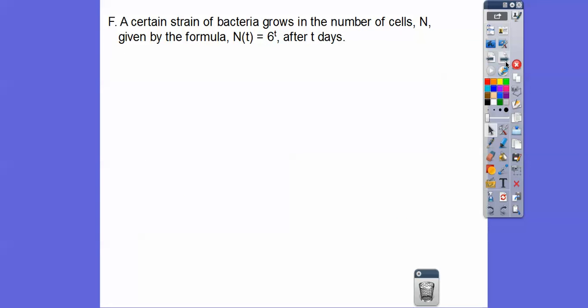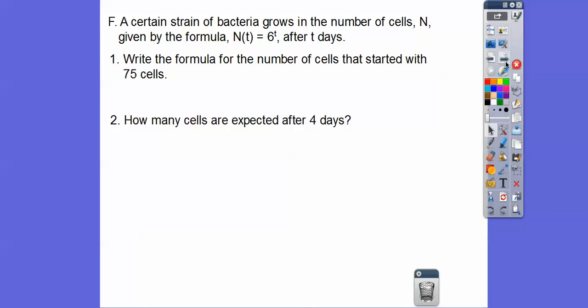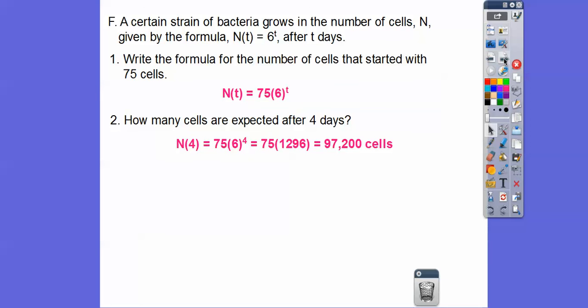A certain strain of bacteria grows with the number of cells given by 6 to the t power after t days. To write a formula starting with 75 cells, we put 75 as 'a', giving us 75 times 6 to the t. To find how many cells after 4 days, let t equal 4 and calculate: you should get approximately 97,200 cells.